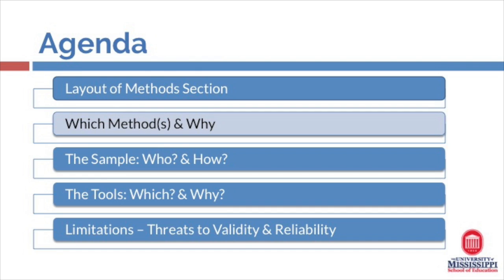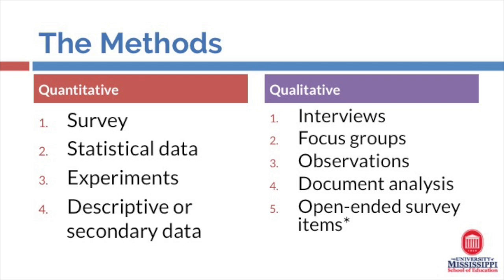This slide provides a really good comparison between quantitative research methods and qualitative research methods. In quantitative research, primary methods include survey, use of statistical data, experiments, and descriptive or secondary data. In qualitative research, however, our primary research instruments are interviews, focus groups, observations, document analysis, and open-ended survey items.